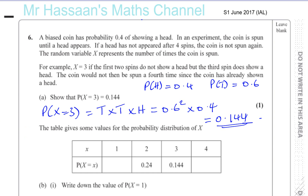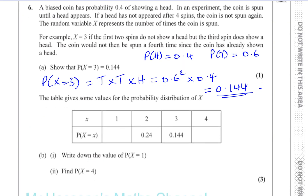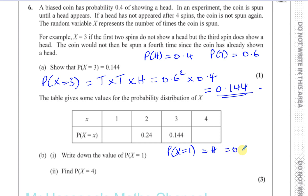Then it says part B part one: write down the value of P(X equals one). Well, that's pretty simple. The probability that X equals one is equal to just getting a head — that's it. Getting a head is 0.4, so P(X=1) = 0.4.